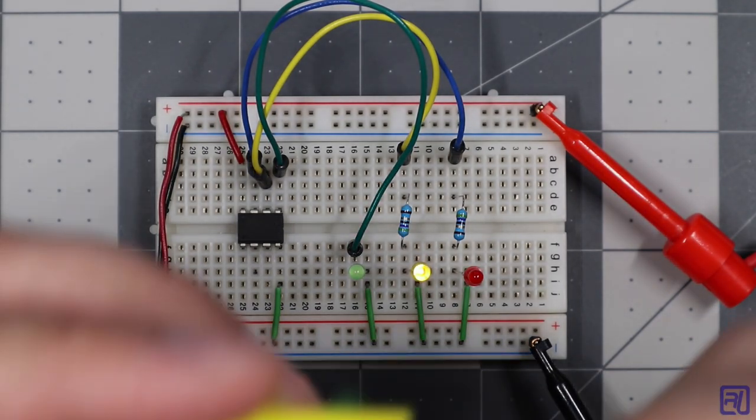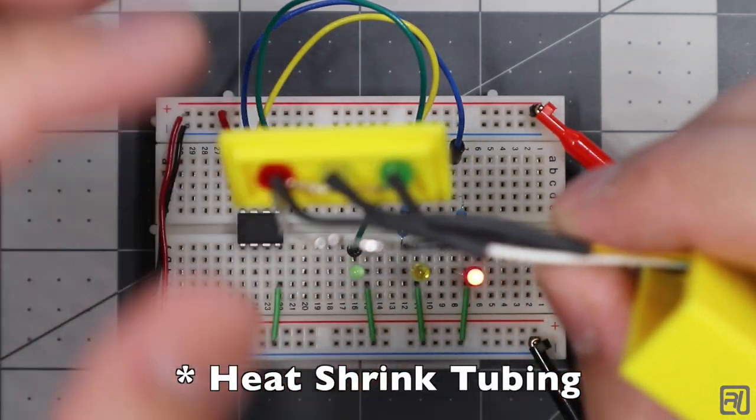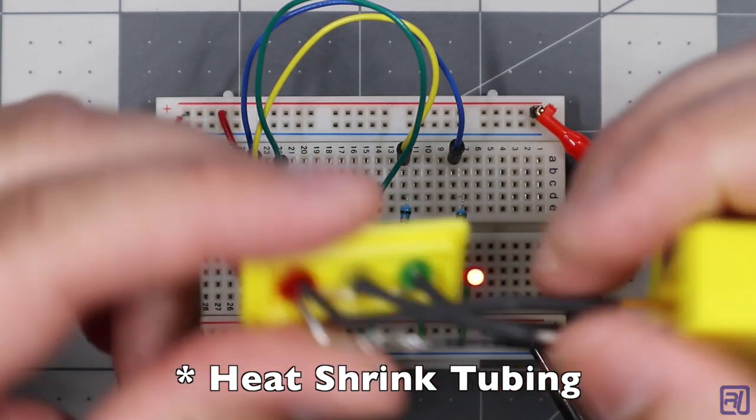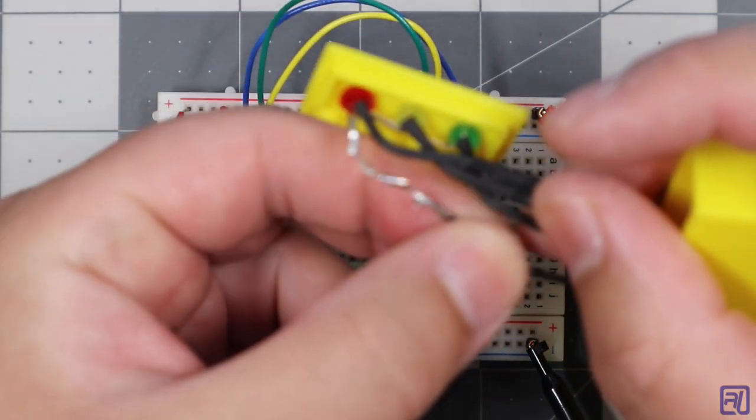On the LED side, I had to use shrink wrap to prevent a short. So each wire has shrink wrap around it. And then I joined all the negative leads together with one wire.